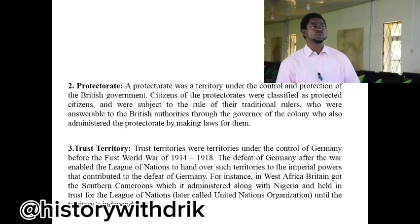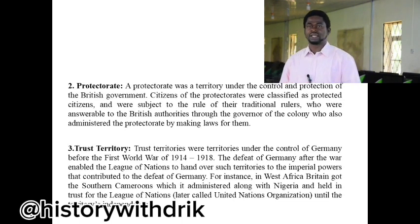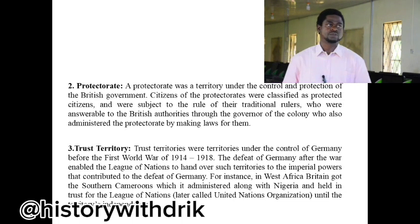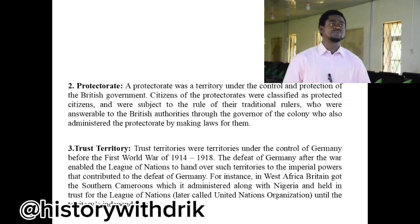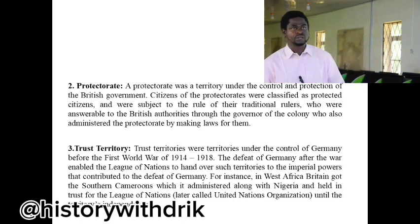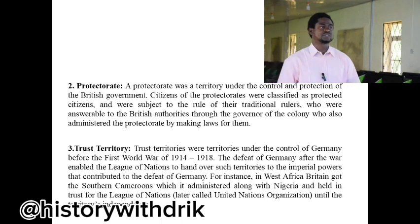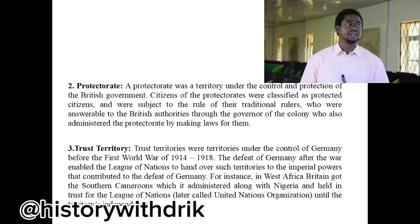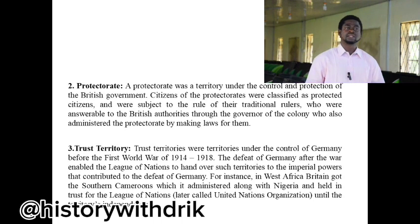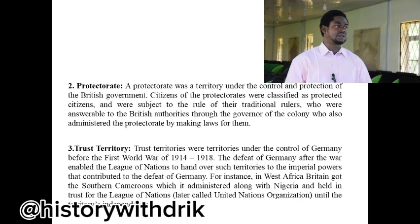The third one is what is called trust territory. Germany caused the First and Second World War. When Germany was defeated by the Allied powers, most of the German possessions in Africa were taken away and made trust territories. Trust territories were territories under the control of Germany before the First World War of 1914 to 1918. The defeat of Germany enabled the League of Nations to hand over such territories to the imperial powers that contributed to Germany's defeat. For instance, in West Africa, Britain got Southern Cameroon, which it administered along with Nigeria, held in trust for the League of Nations, later called the United Nations, until the territories gained independence.